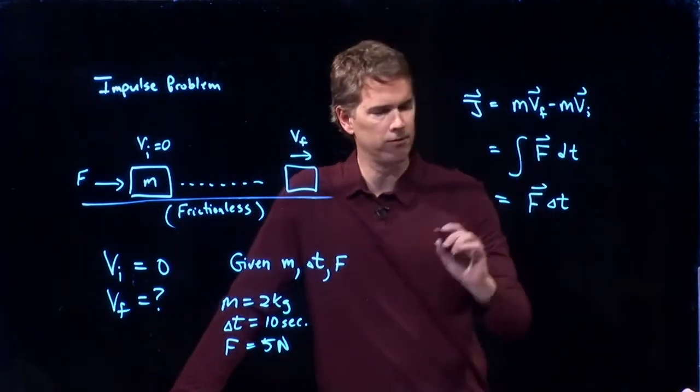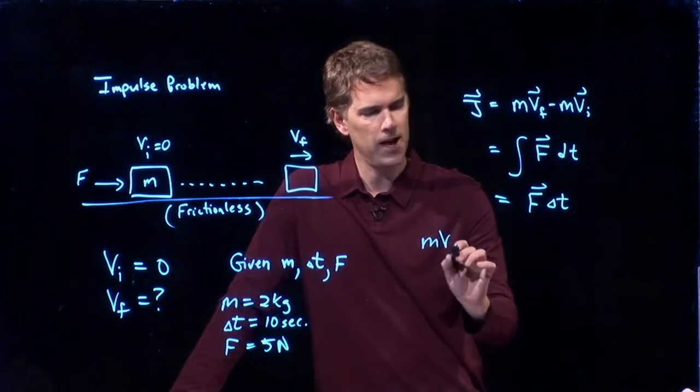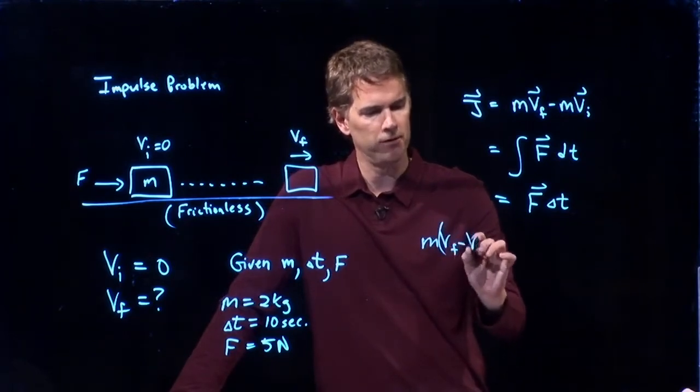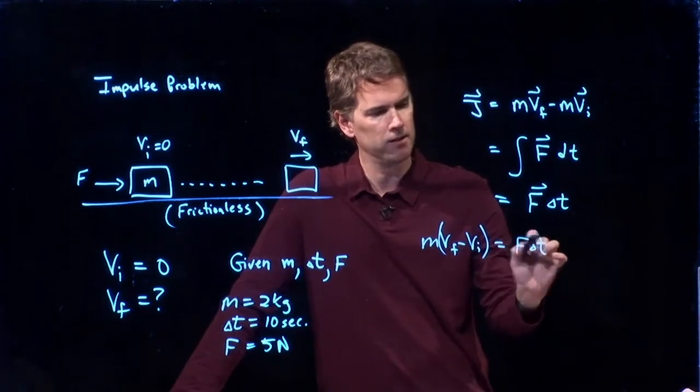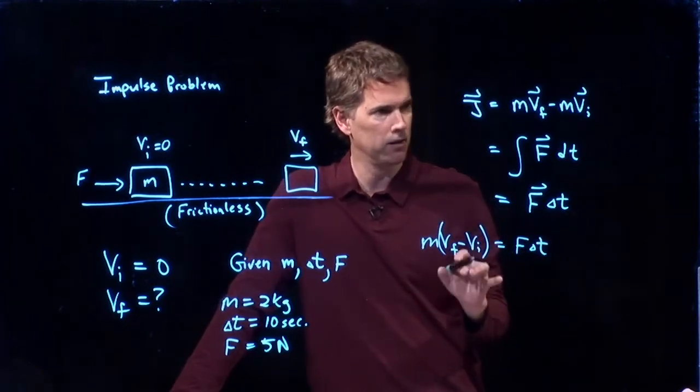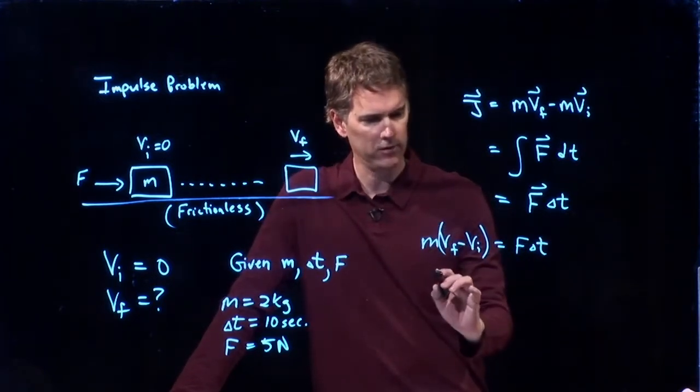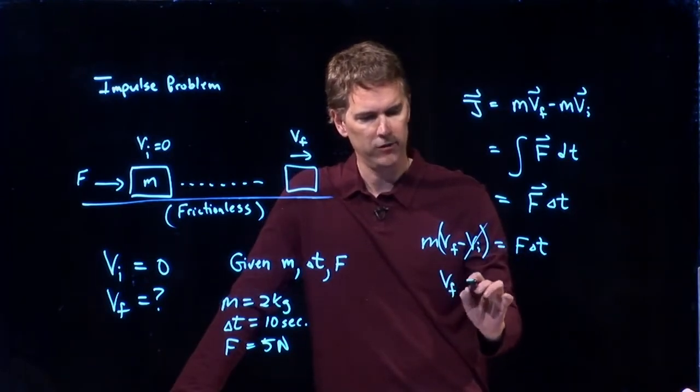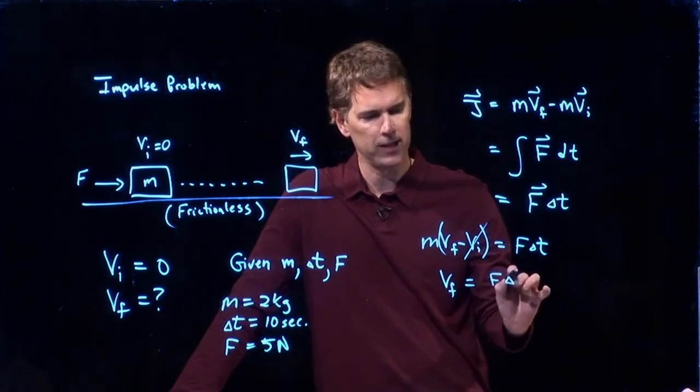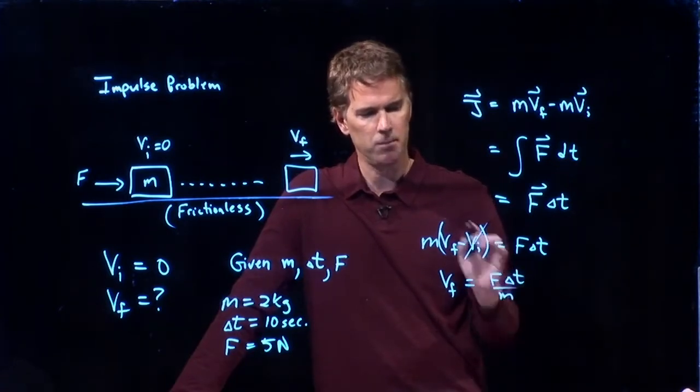Let's solve this thing for vf. m vf minus vi equals f delta t. I'm going to stop writing the vector arrows just for simplicity. vi we said was zero, so that goes away. So vf is f delta t divided by m.